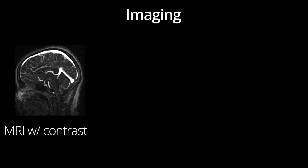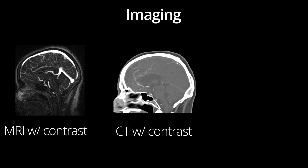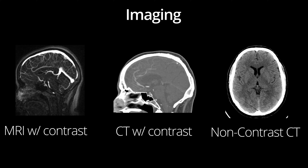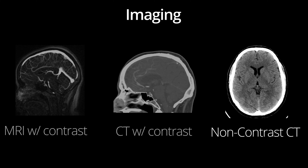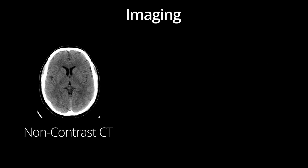Contrast-enhanced MR or CT are the preferred imaging studies for the detection of CVT. Depending on the preferences of the radiologist, these studies may be done with venous contrast timing. Non-contrast CT, however, is oftentimes the first imaging study obtained. Unfortunately, non-contrast CT is not sensitive. In fact, if the patient has a normal neuro exam, then an unenhanced CT will be normal more than 50% of the time in patients with CVT.